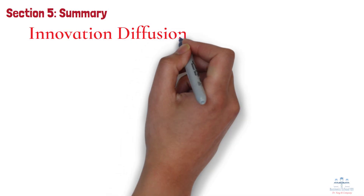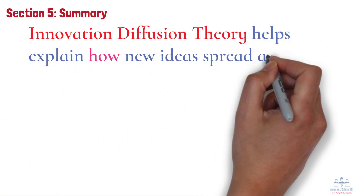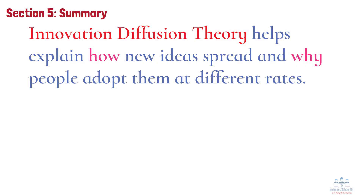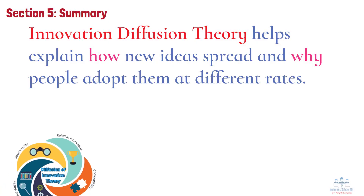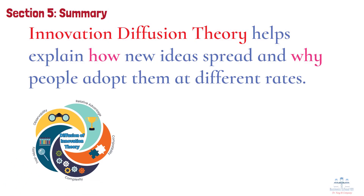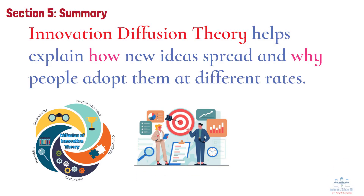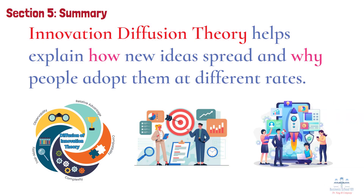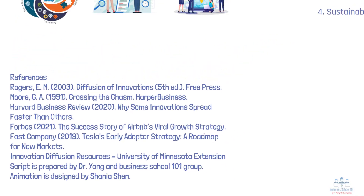Section 5: Summary. Innovation diffusion theory helps explain how new ideas spread and why people adopt them at different rates. By understanding the characteristics of innovations and the different adopter groups, businesses can design smarter product launches, marketing strategies, and change initiatives. Whether you're launching the next big app or rolling out a new company process, mastering this theory can increase your chances of success. If you found this video helpful, don't forget to like, comment below, and subscribe for more insights on innovation, strategy, and entrepreneurship. Thanks for watching, and I'll see you next time.